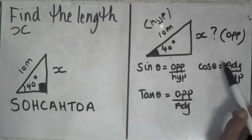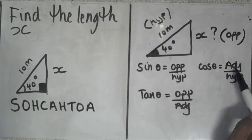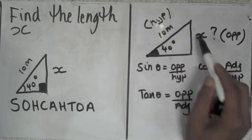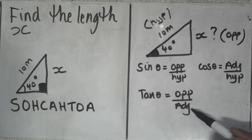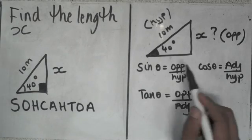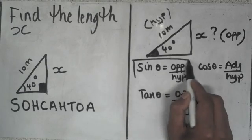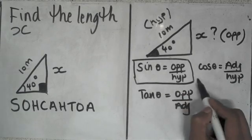For cos, I've got the angle, adjacent side, and hypotenuse — but on my triangle I'm missing the adjacent side. Same for tan — I'm missing my adjacent side. So I'm going to use sin theta.